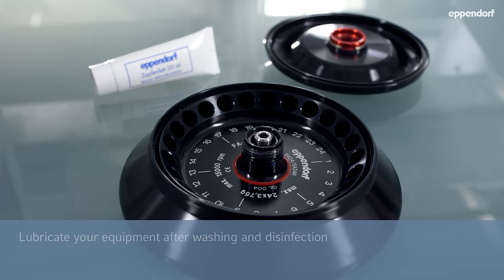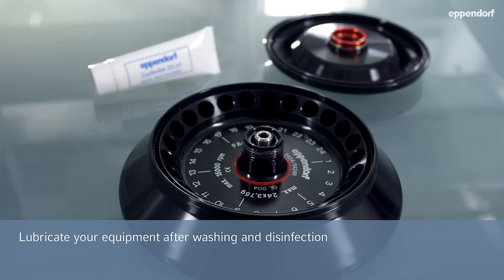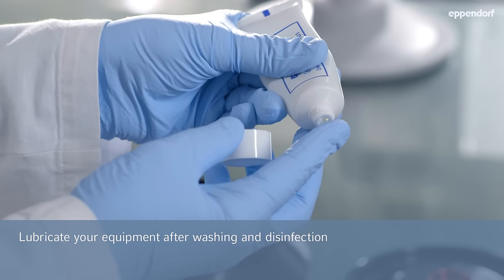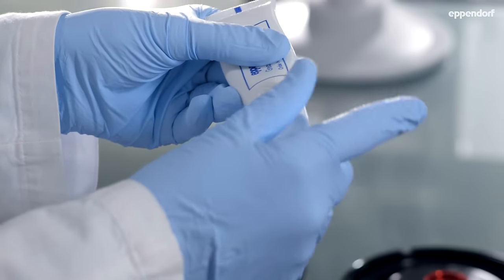To lubricate bucket grooves, pivots, rubber seals and threads, place a small amount of centrifuge lubricant onto your finger.